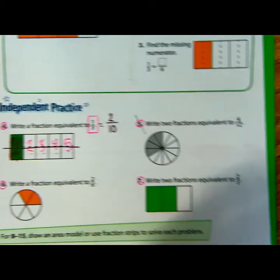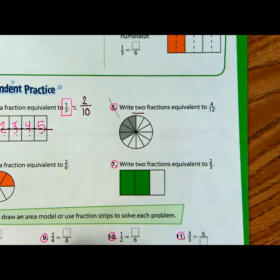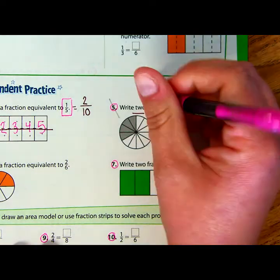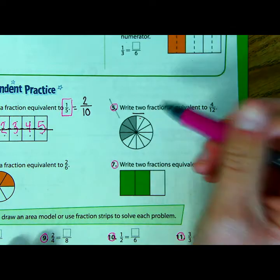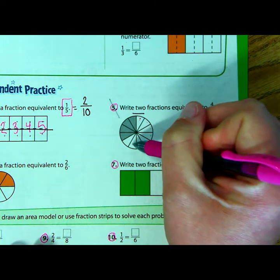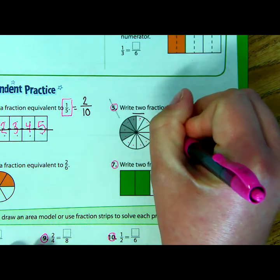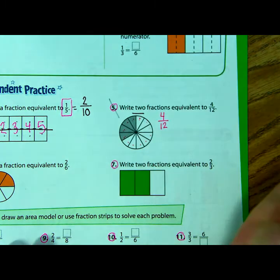Let's continue. Number five, write two fractions. So this time we need two that are equivalent to 4 twelfths. So when I look at the model, the first thing I want to think is, okay, what fraction are they showing me? So if I start right, let's start right here in this space. 1, 2, 3, 4, 5, 6, 7, 8, 9, 10, 11, 12. So what they have modeled here is 1, 2, 3, 4 shaded, the fraction 4 twelfths.